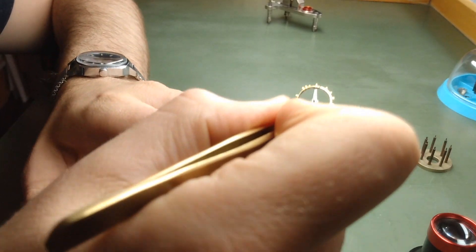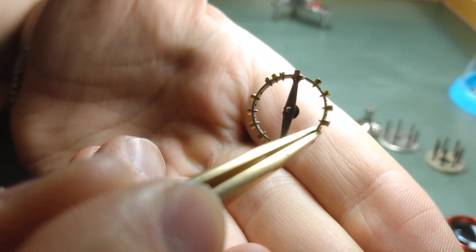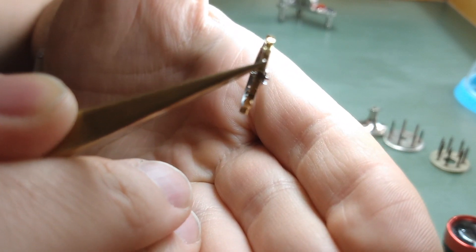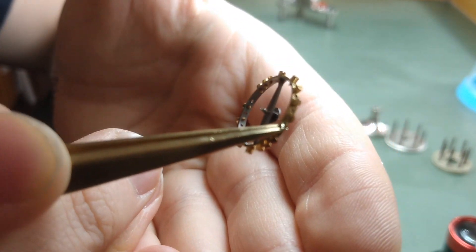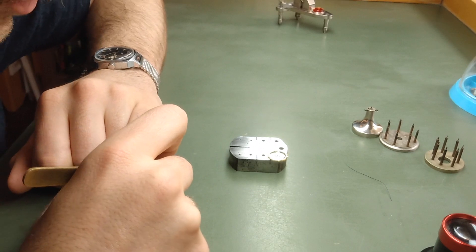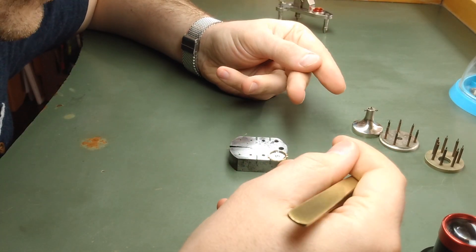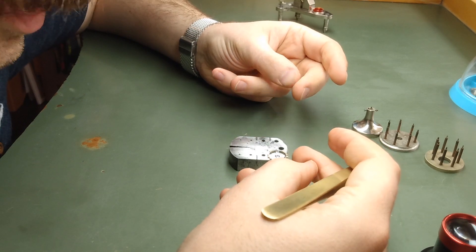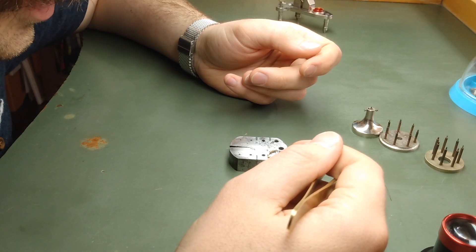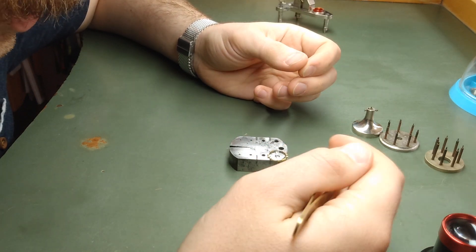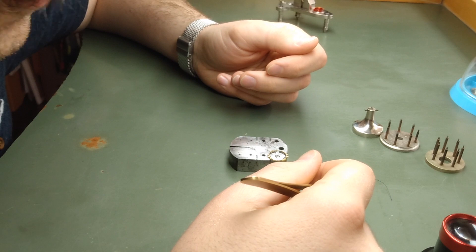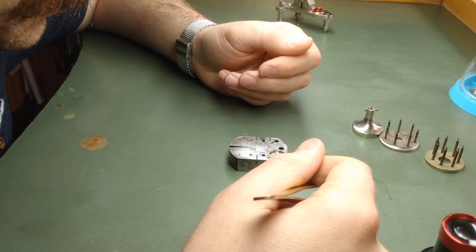So there's my balance wheel without the hairspring. So there's our staff. You can see riveted through the wheel. And what we're going to do is we're going to put the tiny, tiny pivots of that staff on the poising tool and try to find the heavy spot on the balance. You'll notice right now I'm not wearing finger cots. I always wear finger cots when I assemble a watch after it's been cleaned. You don't want to get fingerprints on it. But I found that when you're poising, you need every nerve ending available to you. So you may see me touch the balance with my bare fingers. But what I'm going to do afterward is once the balance is poised, I'm going to re-clean it. So yeah, let's get started.